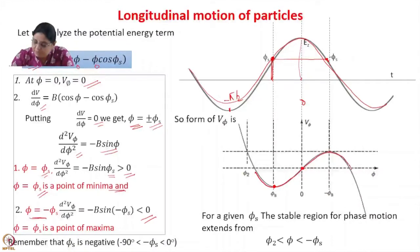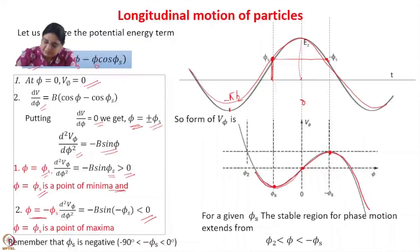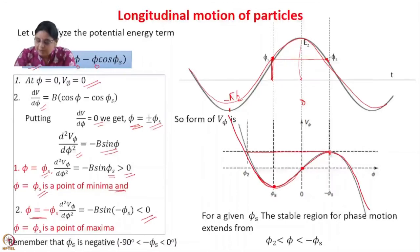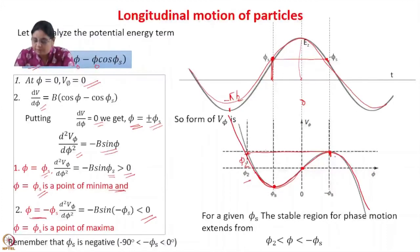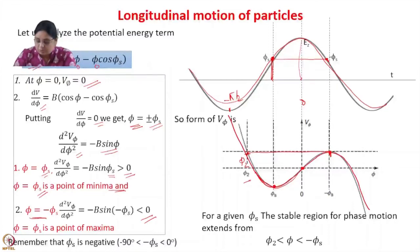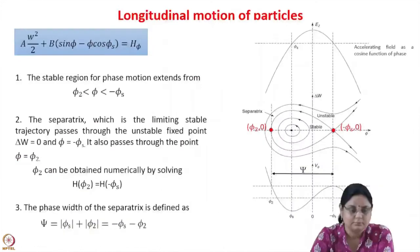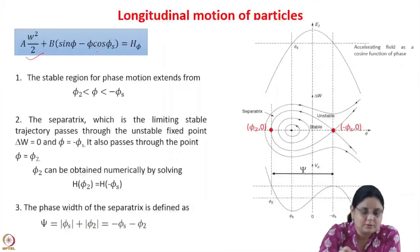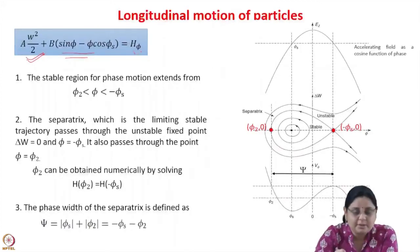The potential will have a form where there is a maxima at phi equal to minus phi_s, and since there is a minima at phi_s, the potential keeps on increasing in the other direction. There is a potential well for phi lying between minus phi_s and some value phi_2. The first term represents the kinetic energy and the second term is like the potential energy — this is the constant of motion.